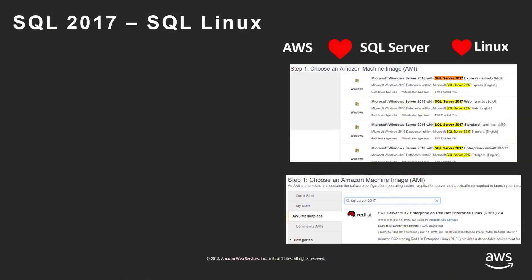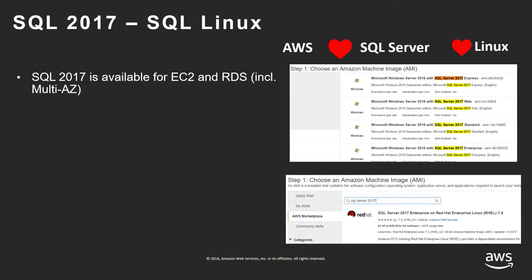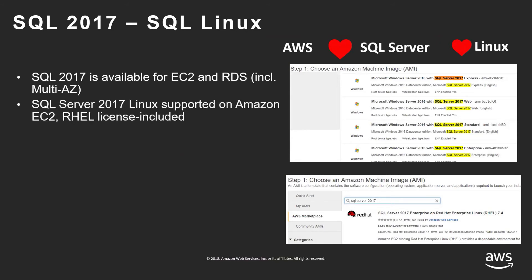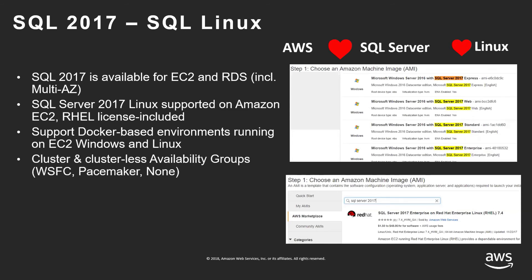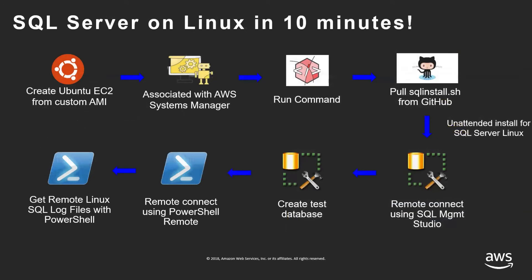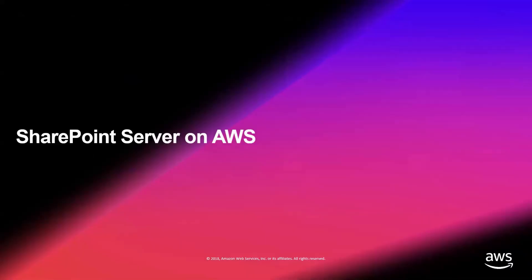Starting with SQL Server 2017, you can now run SQL Server on Linux. This option is available from the AMI when launching the EC2 version, and it is also now available within RDS. It supports EC2 and Red Hat licensing, is Docker-based, and supports cluster or clusterless availability groups. This workflow allows you to get started with SQL Server in less than 10 minutes. Now I'll hand over to Chris to talk about SharePoint.